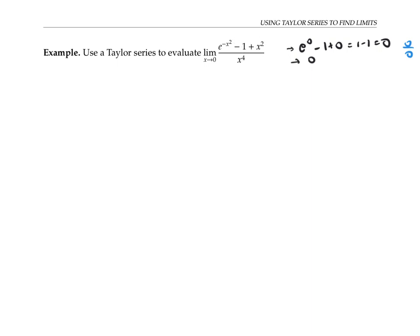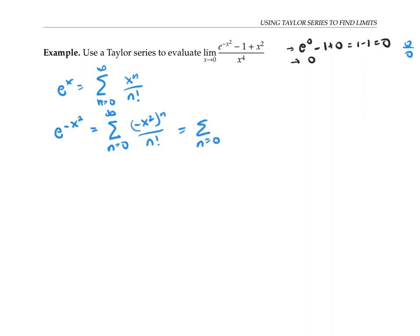These terms here are already polynomial terms, so we need to find a Taylor series for e to the minus x squared. We've seen that the Taylor series for e to the x is this sum. So we can get a Taylor series for e to the minus x squared by plugging in minus x squared for x. Simplifying by distributing the n, we get minus 1 to the n times x to the 2n over n factorial. The first few terms are 1 when n equals 0, minus x squared over 1 factorial when n equals 1, plus x to the 4th over 2 factorial when n equals 2, minus x to the 6th over 3 factorial when n equals 3, and so on.